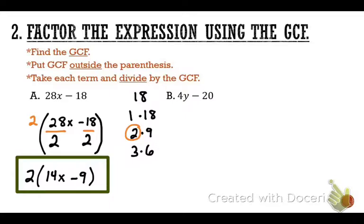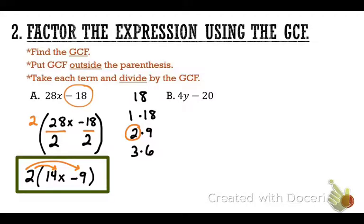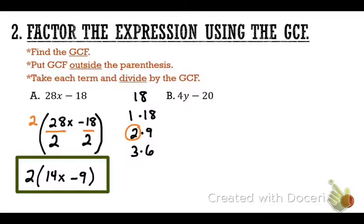Let me show you something — you don't need to write this down, but with distributive property you'd multiply 2 by everything in the parentheses. 2 times 14x equals 28x, and 2 times negative 9 equals negative 18, which is exactly what we started with. We've basically done the opposite of distributive property — that's what factoring is.